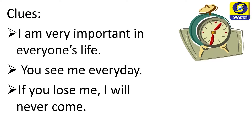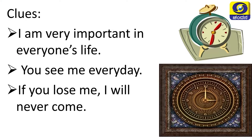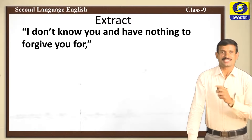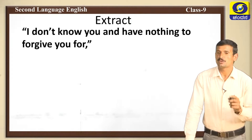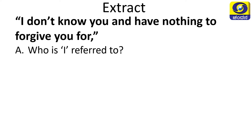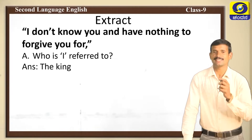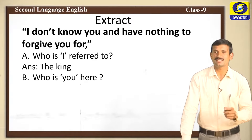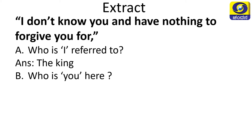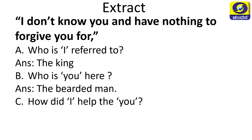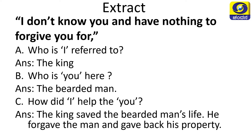Now we'll move to the questions on the extract: 'I don't know you and have nothing to forgive you for.' First question: who is 'I' referred to? The king. Second question: who is 'you' here? The bearded man. Third question: how did 'I' help 'you'? The king saved the bearded man's life, forgave the man, and gave back his property.